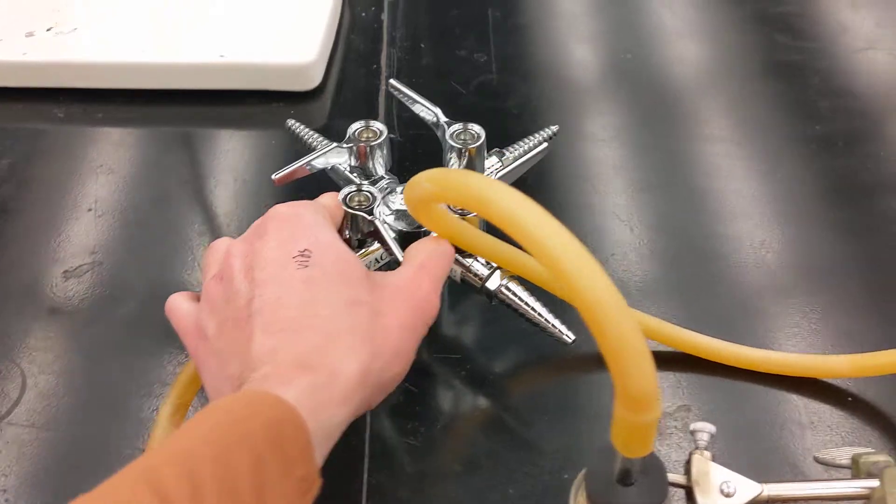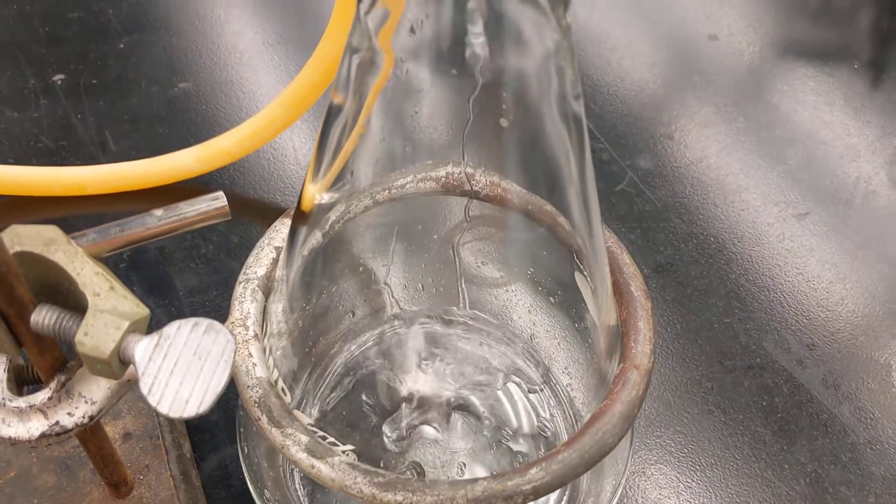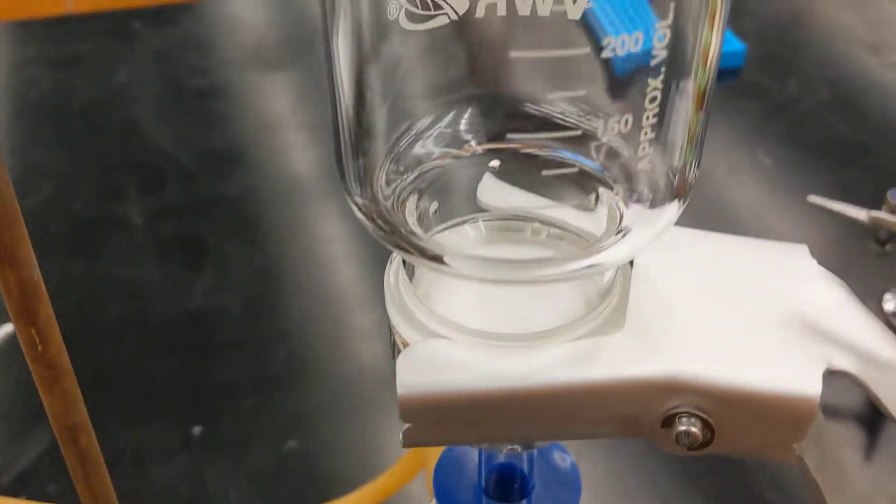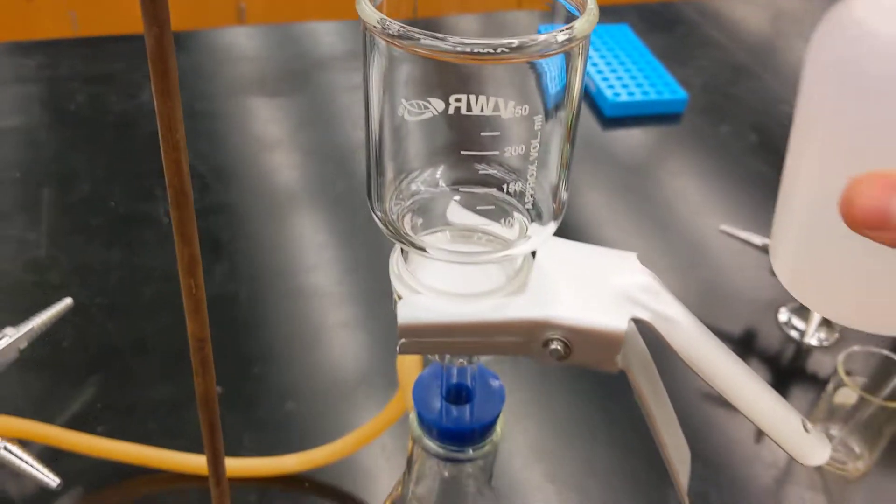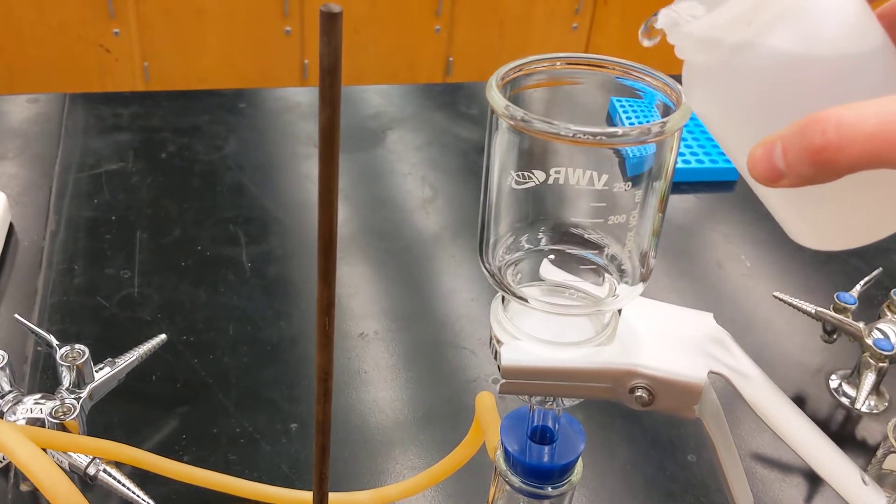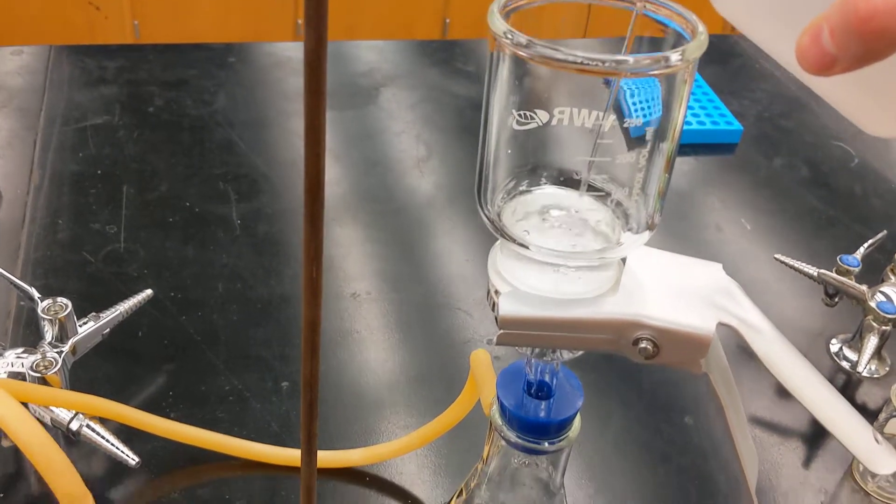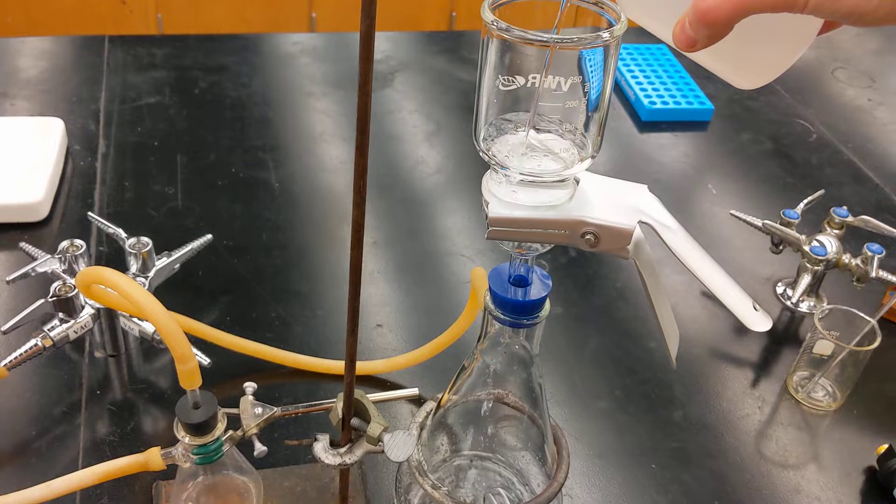Then I'm going to go ahead and turn on the vacuum line, open that and see the fluid drain down. Okay, so I've got a nice wet filter. I'm going to leave the vacuum open and I'm going to slowly pour this in. I want to keep that filter wet the whole time during the duration of the filtering process.